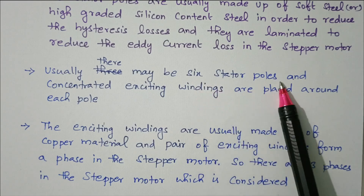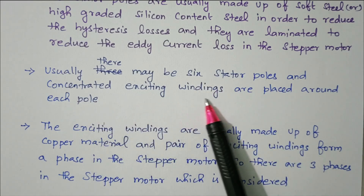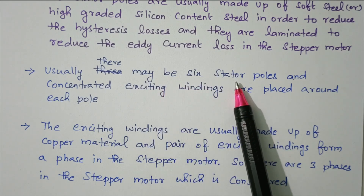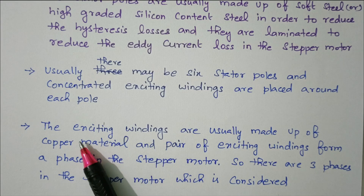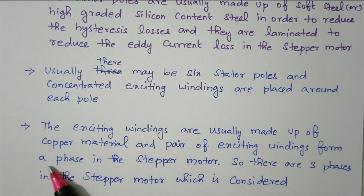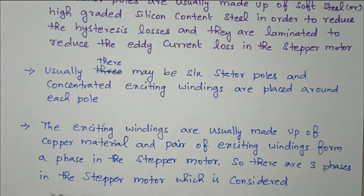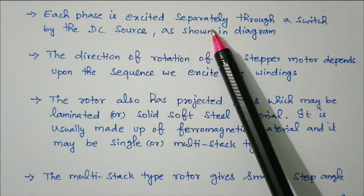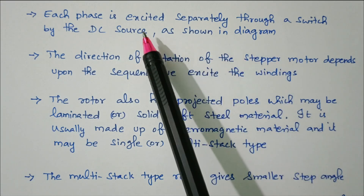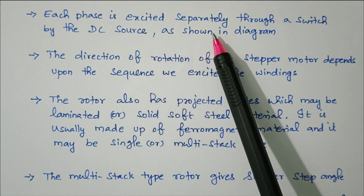There are usually six stator poles, and concentrated exciting windings are placed around each pole — A, A-dash, B, B-dash, C, C-dash. These are excited by separate circuits. The exciting windings are usually made up of copper material. A pair of exciting windings forms one phase, so there are three phases in the stepper motor. Each phase is excited separately through a switch by a DC source, as shown in the circuit diagram, using switches S1, S2, S3.